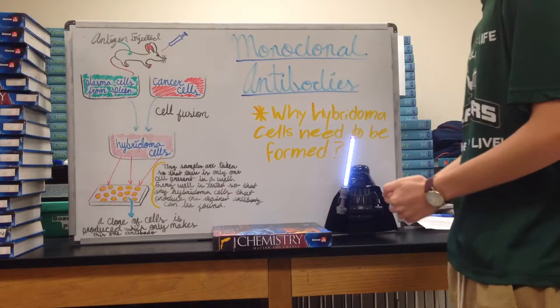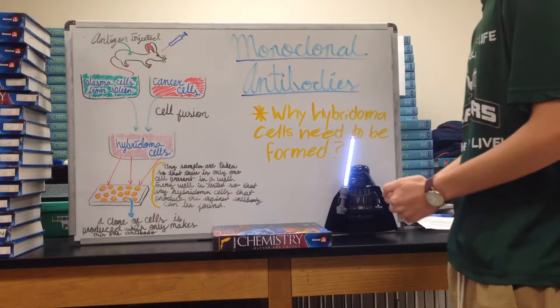Why do hybridoma cells need to be formed? Because the B lymphocytes, or the plasma cells that create antibodies, do not divide. That's why they're fused with cancer cells, so they could, like them, divide uncontrollably.